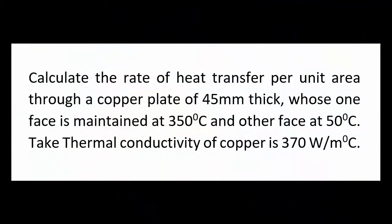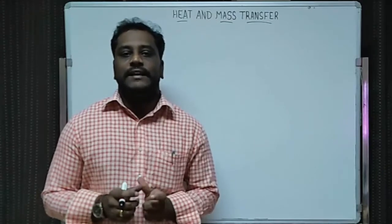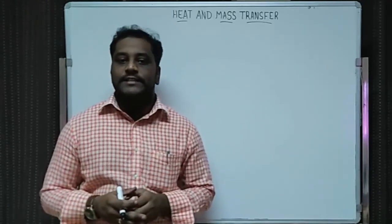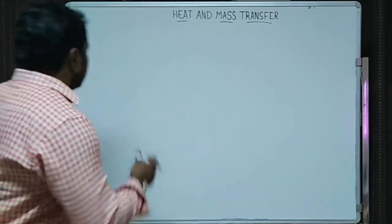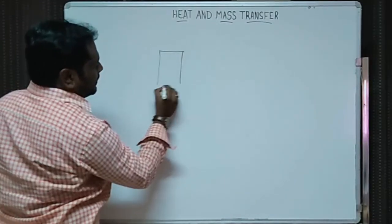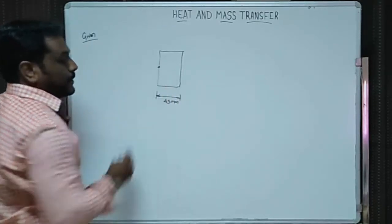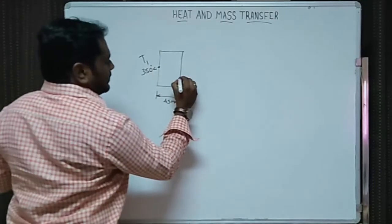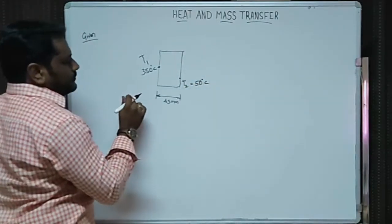In the first problem, it is given that it is a 45 mm thick copper plate. One side of the copper plate is maintained at 350 degree Celsius and the other side is maintained at 50 degree Celsius. The thermal conductivity value has been given and you have to find out the heat flux value from Fourier's law. So the given data: it is a copper plate with thickness of 45 mm, T1 = 350°C and T2 = 50°C.